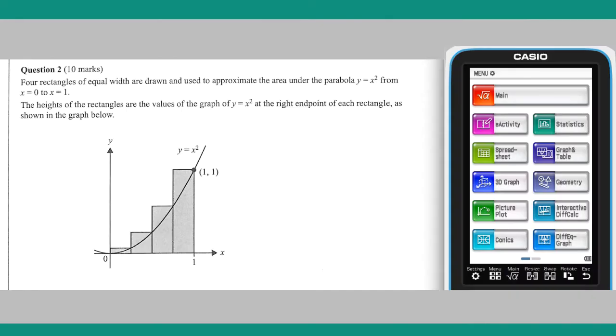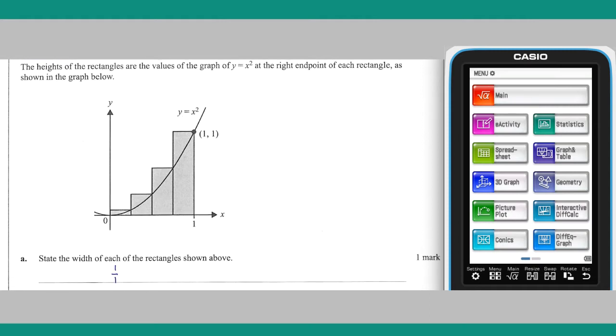As the four rectangles shown in the diagram equally divide the horizontal distance from x equals 0 to x equals 1, the width of each rectangle is a quarter or 0.25.